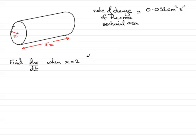OK, so how do we do this? Well first of all, looking at this phrase here, the rate of change of the cross sectional area, when we're talking about rates of change we often use calculus.